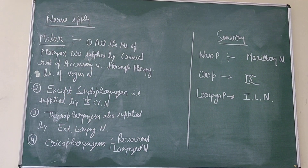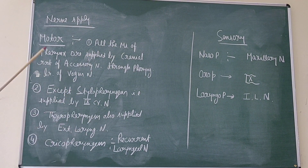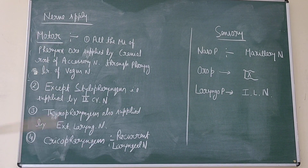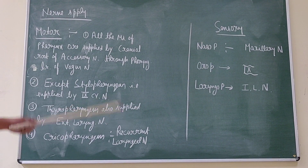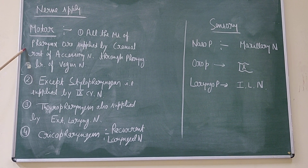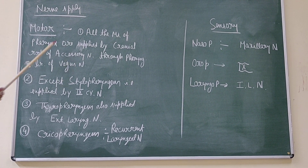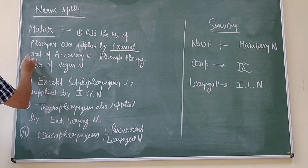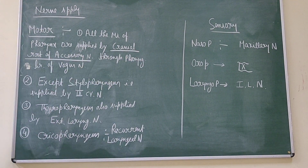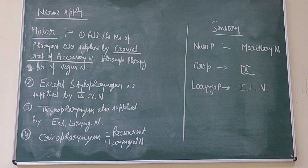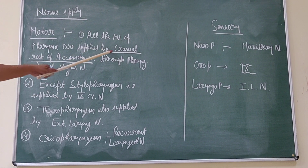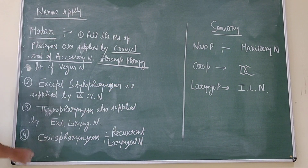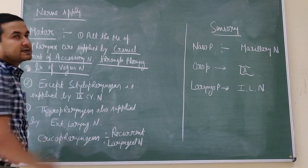The nerve supply of the pharynx has both motor and sensory supply. For the motor supply, all the muscles of the pharynx — constrictor as well as the longitudinal — are supplied by the cranial root of the accessory nerve, that is the 11th cranial nerve. However, the 11th cranial nerve does not directly supply; it is through the pharyngeal branches of the vagus nerve.